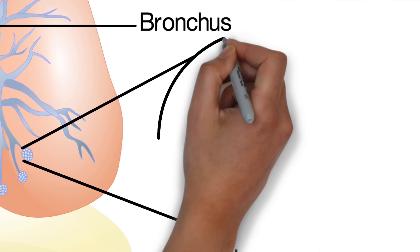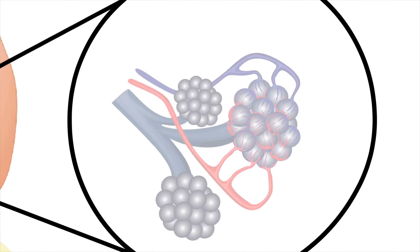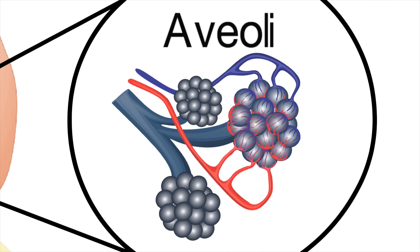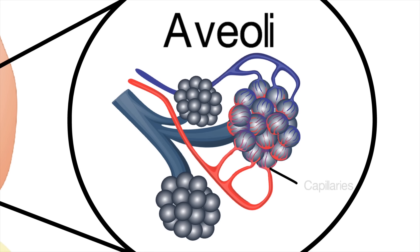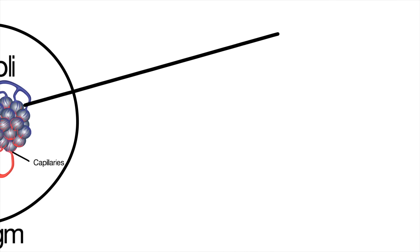If we zoom in, we can see that the alveoli are like bunches of grapes. Each little alveolus gives a large surface area for oxygen to diffuse into the blood and for carbon dioxide to diffuse out. We can also see capillaries all around the alveoli, constantly carrying blood to pick up the oxygen and take it away quickly to the rest of the body.